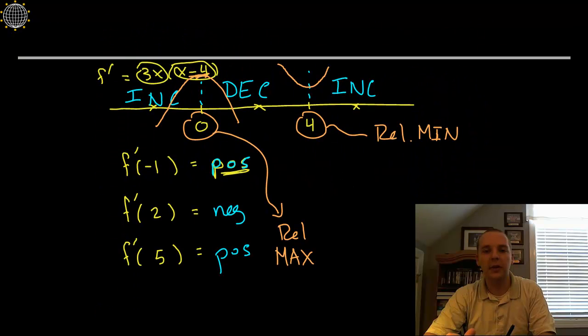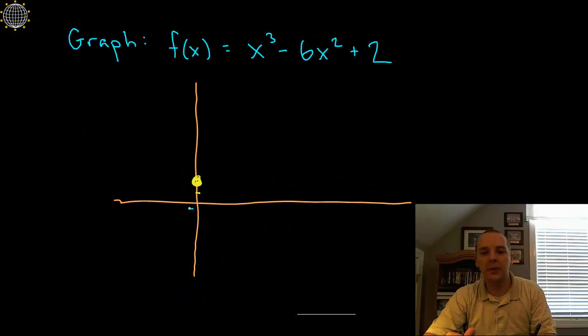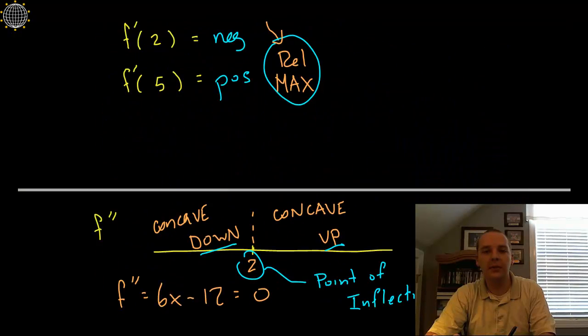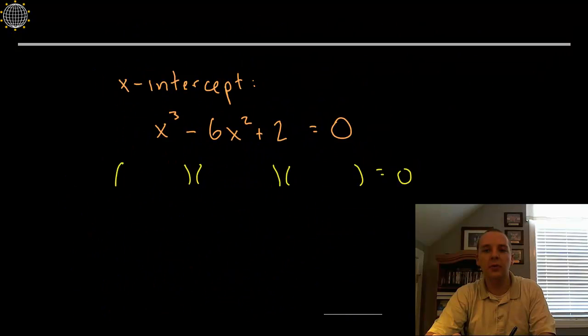Keep in mind, this is just a sketch, this is not a perfect graph. So let's start with first derivative things. I found that I had a relative max at 0, and a relative min at 4. So I know on my graph here, I'm going to have a maximum at 0, and a minimum at 4. So I know that it's going to be increasing before 0, and decreasing after 0, and increasing after 4. Now we also have to keep in mind at the same time what the concavity is.